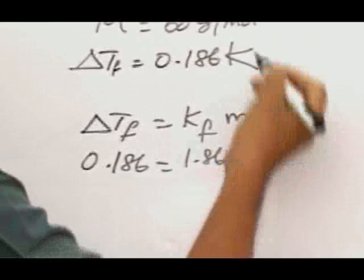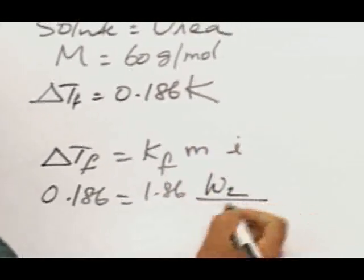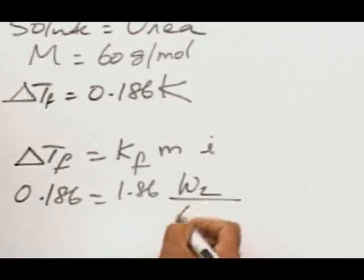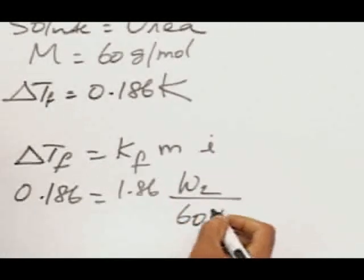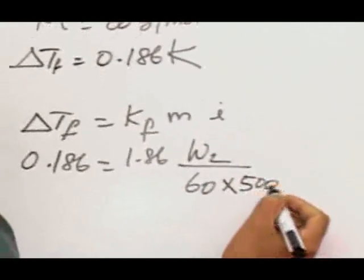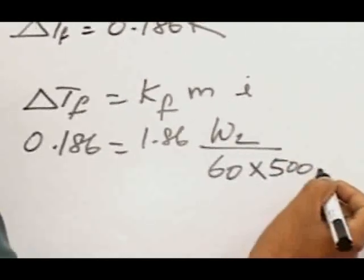W2 divided by molar mass, that is M value takes the value 60 grams per mole, and that is dissolved in 500 grams of the solvent, which is water. When we put 500 grams, if this has the